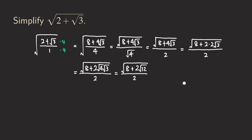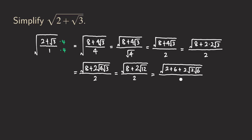Now we are going to think about how to manipulate this expression further. We are going to break the eight up into two plus six. And then this radical 12, we are going to write it as square root of two times square root of six. So we have the square root of quantity two plus six plus two times square root of two times square root of six, all over two.